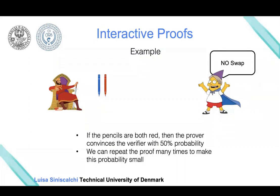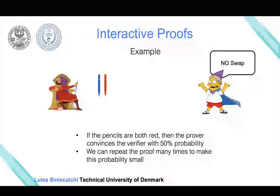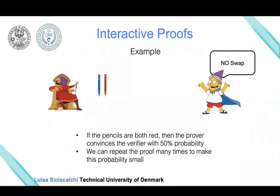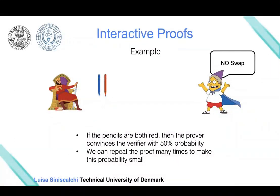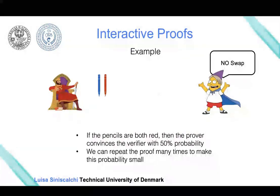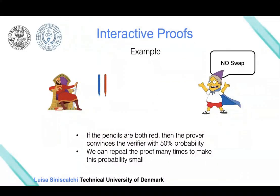If we repeat this protocol n times, then to succeed in proving a false theorem, the prover needs to guess correctly in each single execution. We exponentially lower the probability that a malicious prover can succeed in proving he is not color-blind.